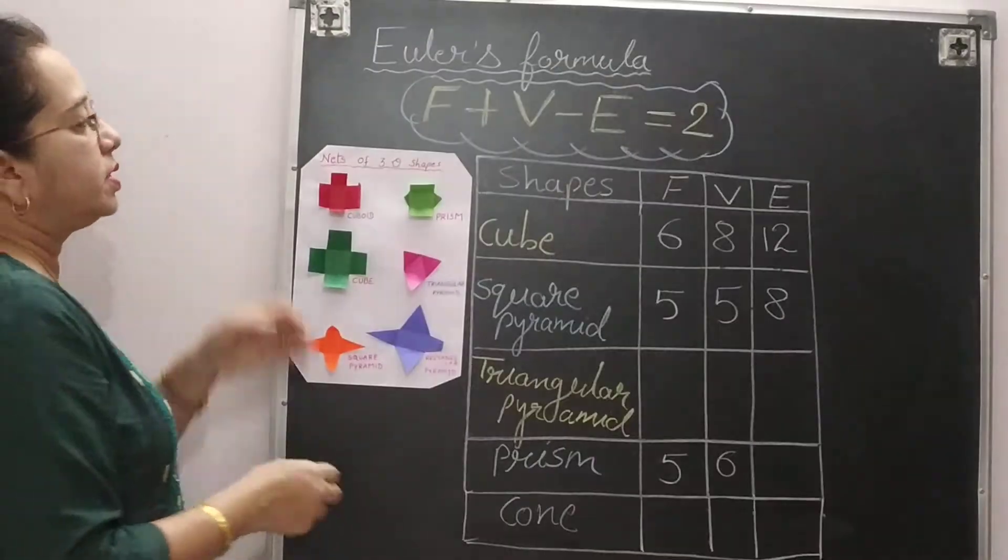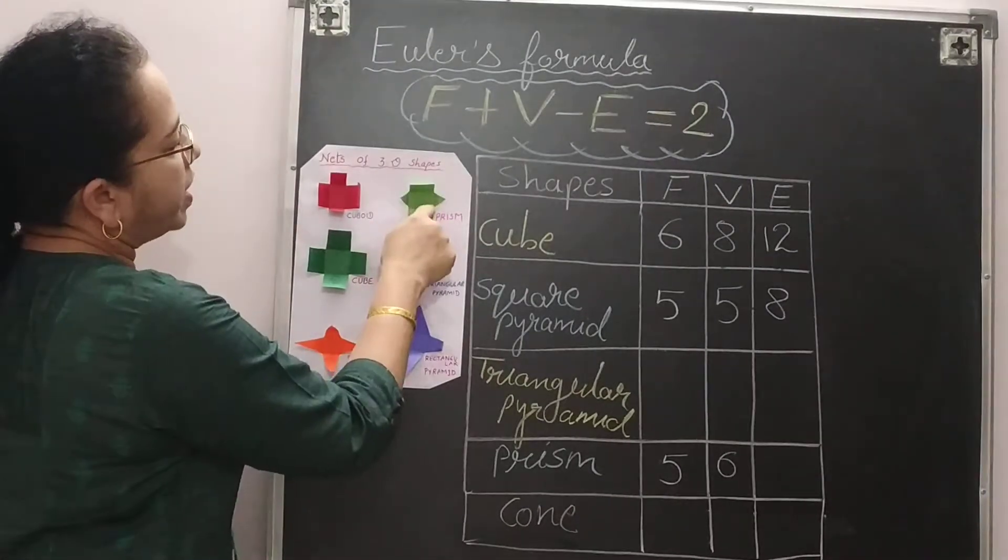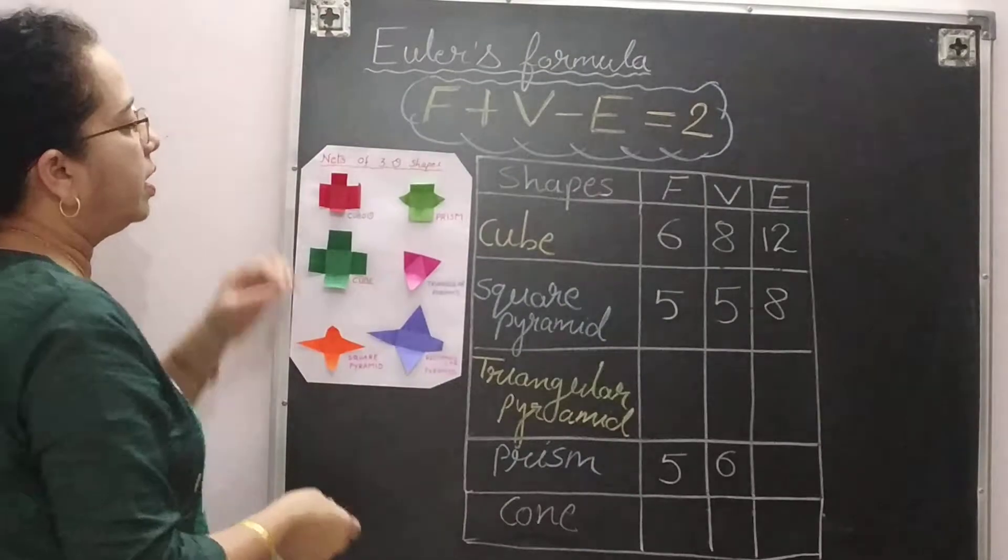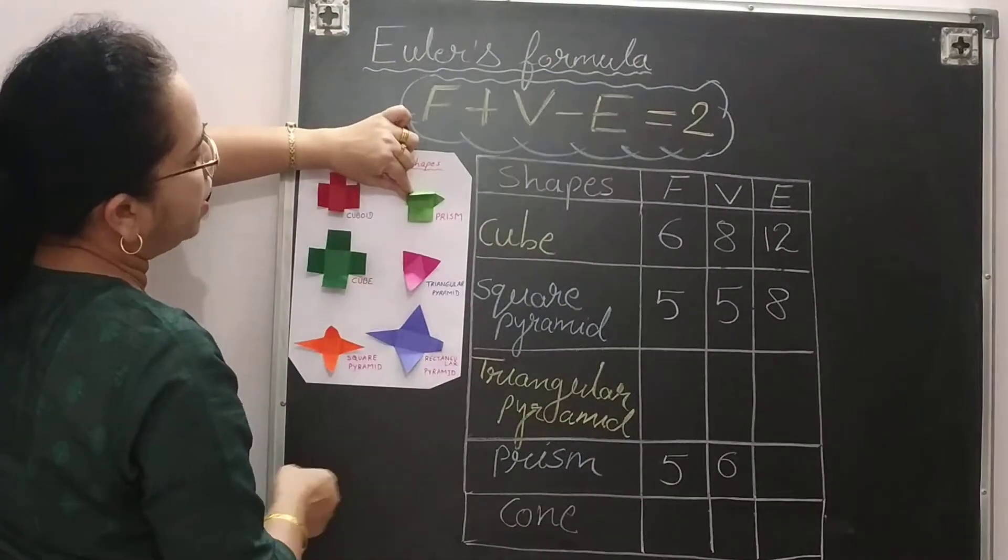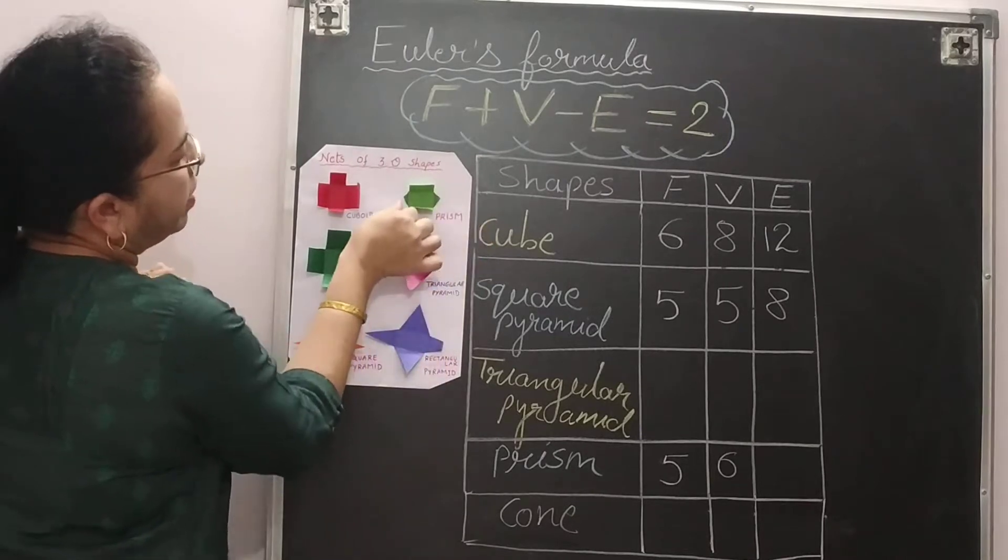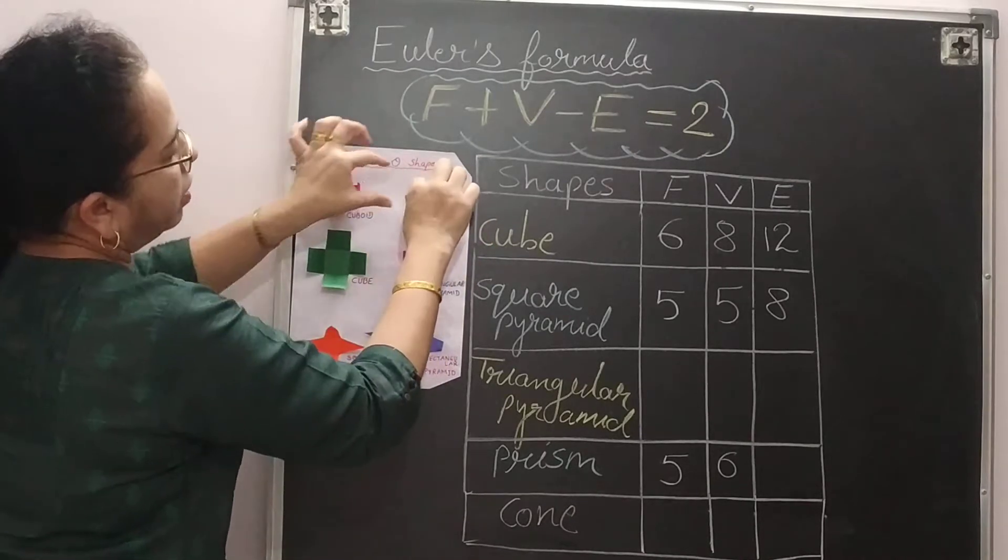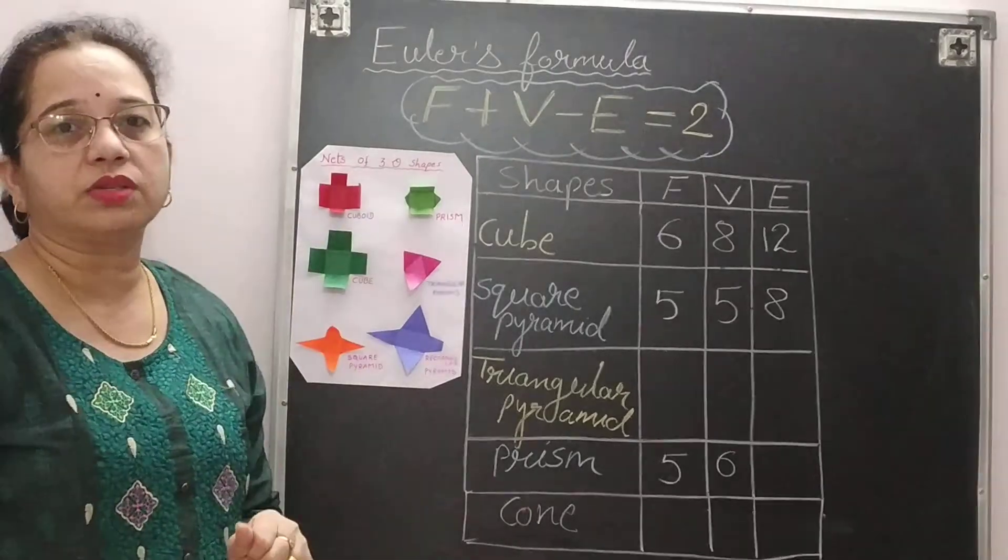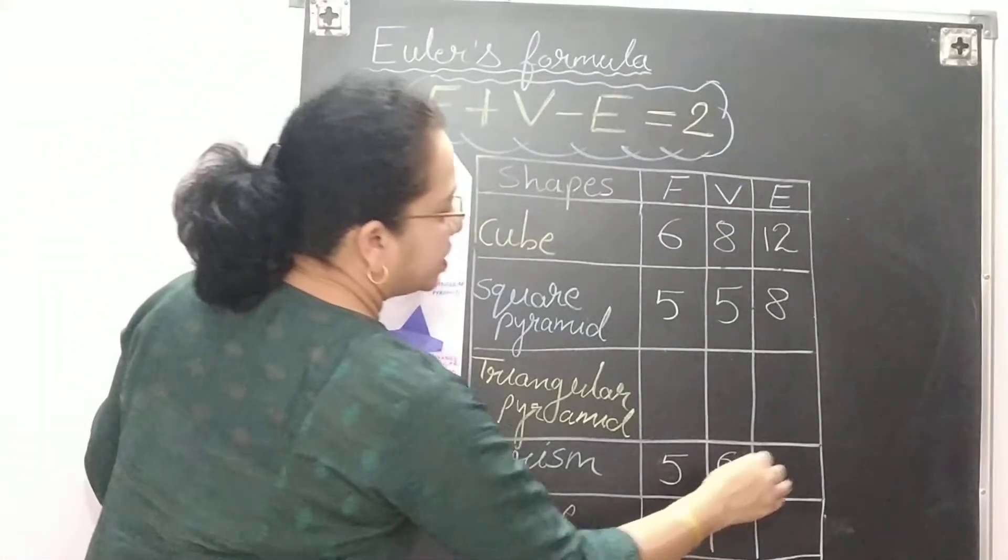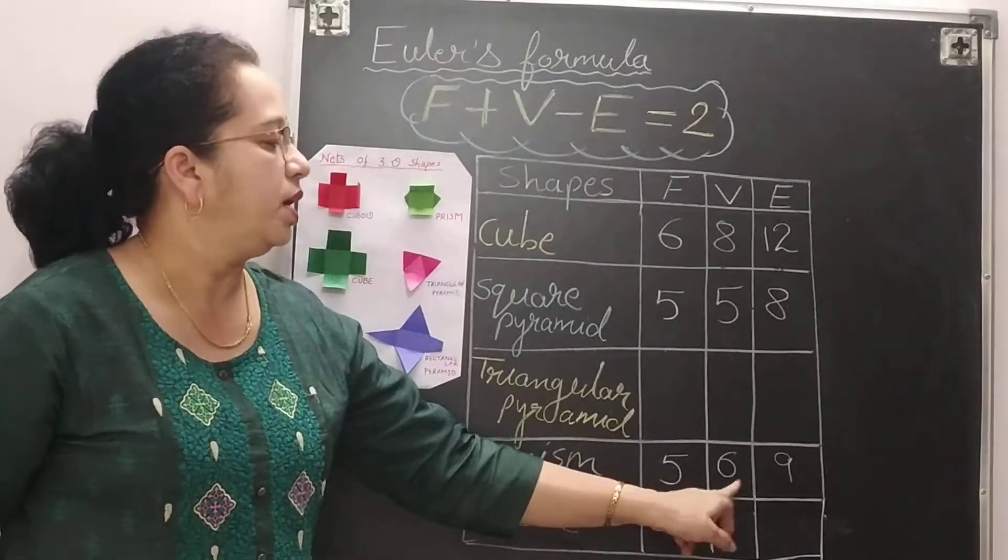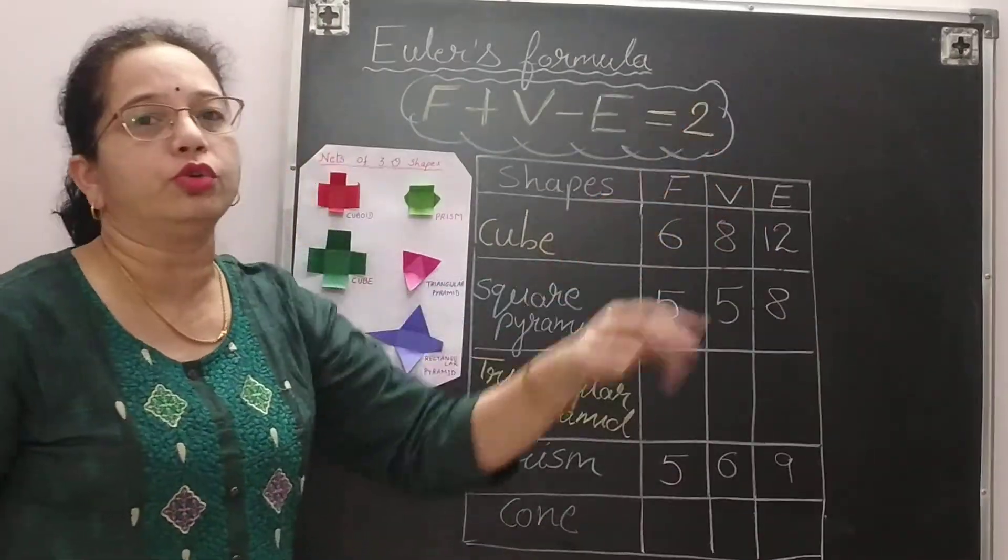Now we will count edges. So for this base rectangle you will get 4 creases. So 4 edges are there. Now here this one will give you 1, this will give you 2, this is 3 and this one is 4 and this front one again 5. So 5 and base 4, so 9 edges are there. So 6 plus 5, 11. 11 minus 9 will give you 2.